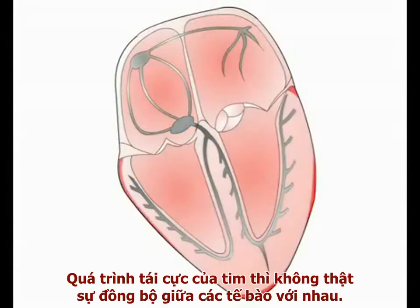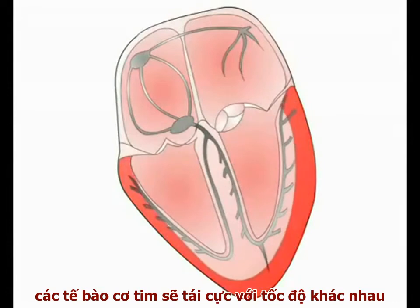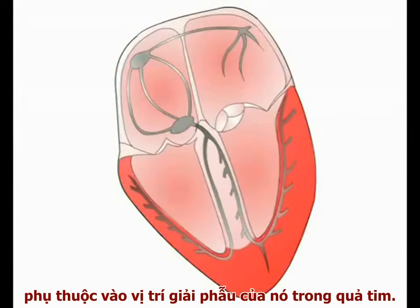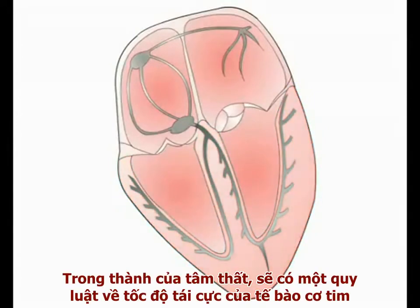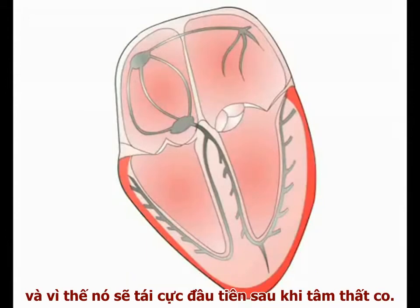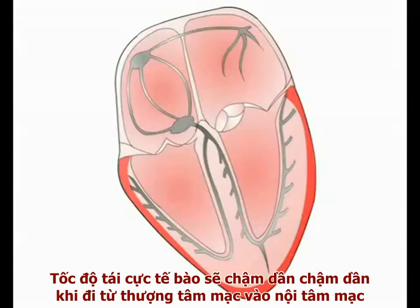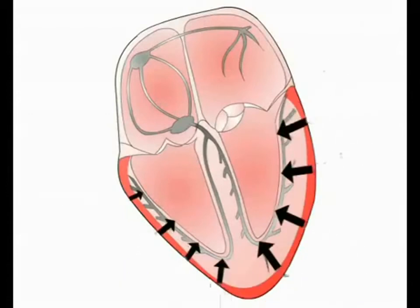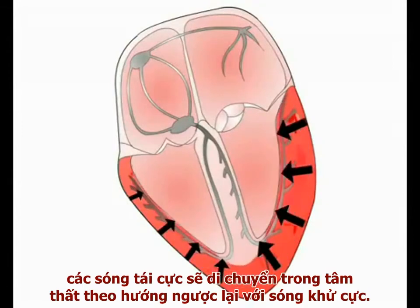Cardiac repolarisation is not truly propagated between cells. However, cardiac myocytes repolarise at different rates depending on their anatomical location within the heart. Within the ventricular wall, there is a gradient in the rate of cellular repolarisation. Cells in the epicardial region have the fastest rate of repolarisation and repolarise first following ventricular contraction. The rate of cellular repolarisation is then progressively slower as we move from the epicardium towards the endocardium. Therefore, perhaps counterintuitively, repolarisation spreads through the ventricles in the opposite direction to the depolarisation wave.